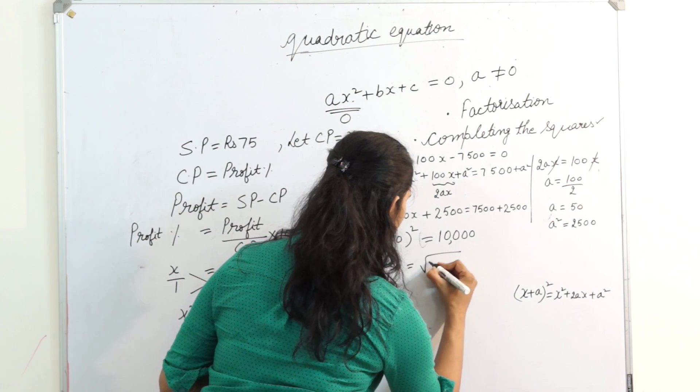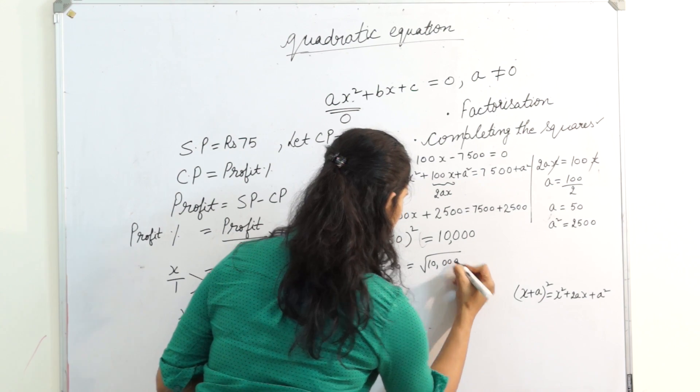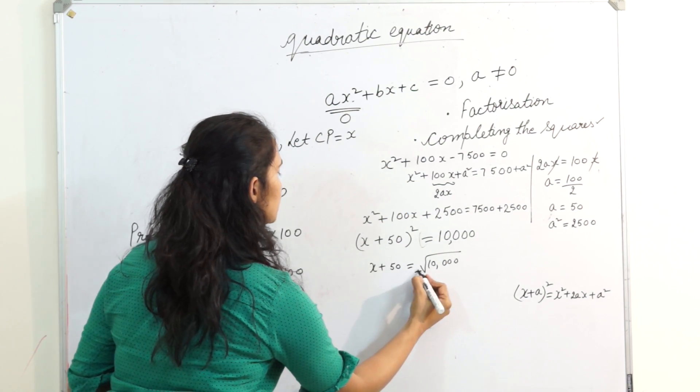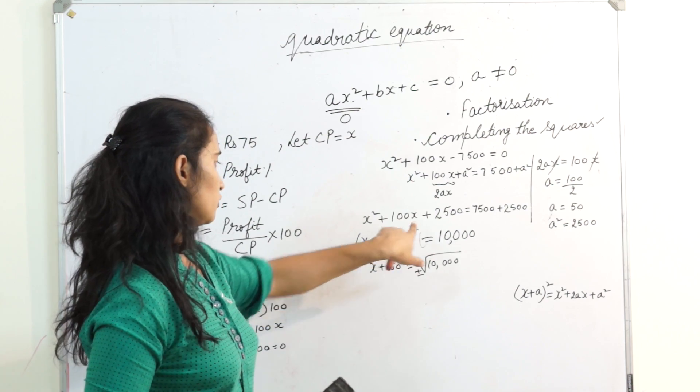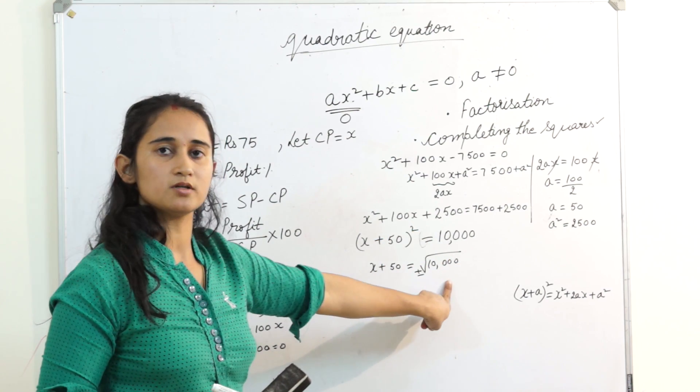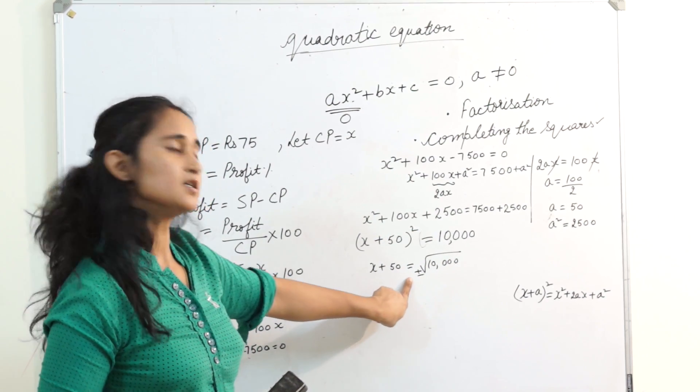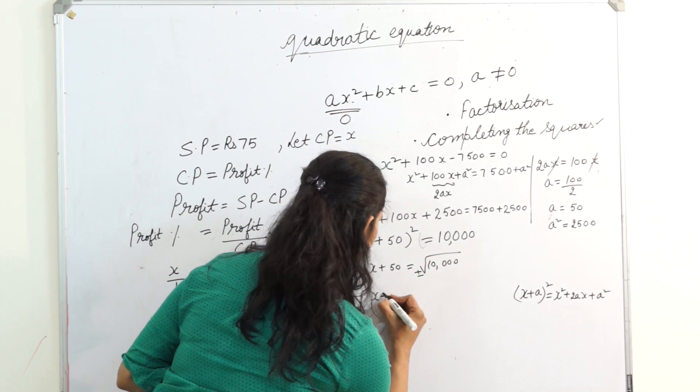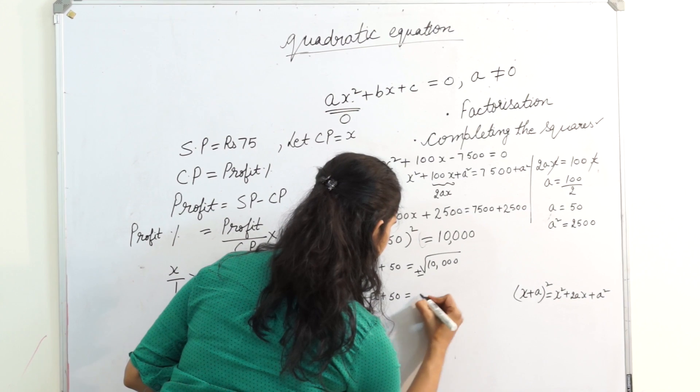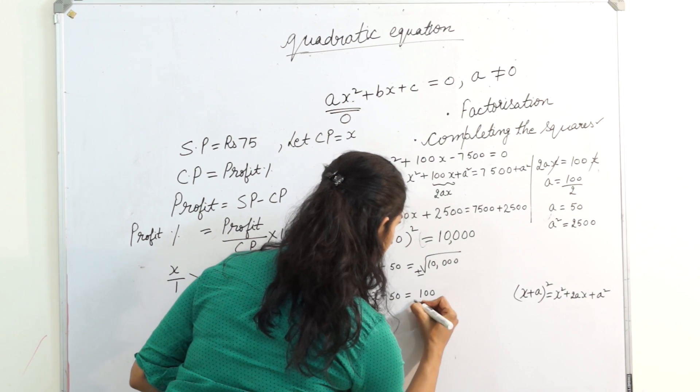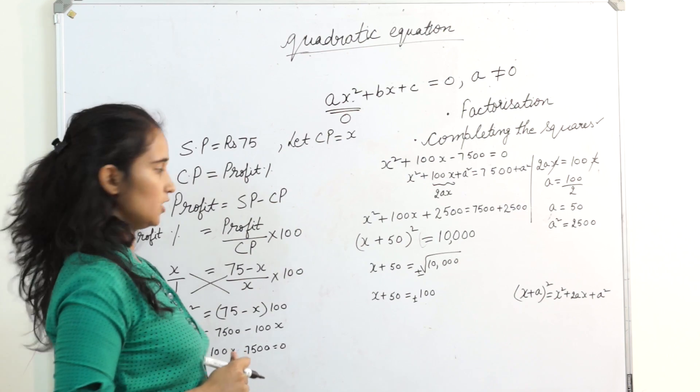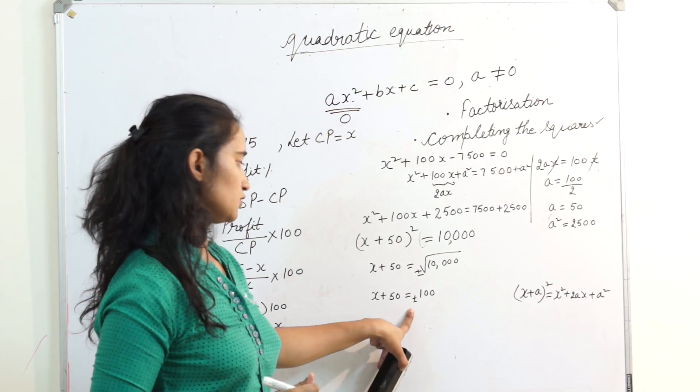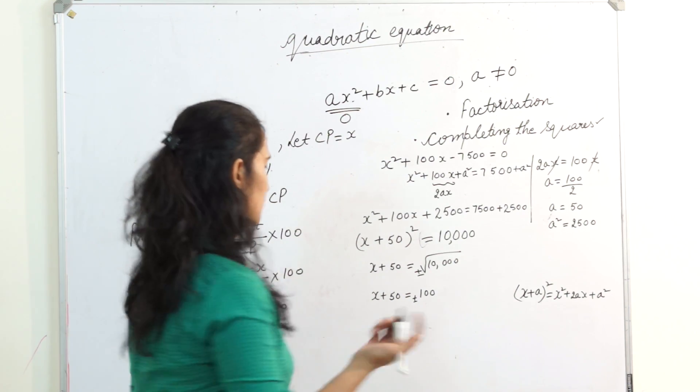When I remove this square, what is the square root of 10,000? It is always plus minus. Do remember, whenever you remove this square, it becomes square root on the other side. It is always plus and minus. So I got x plus 50 equals plus minus 100.